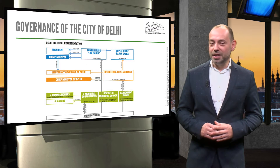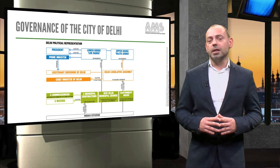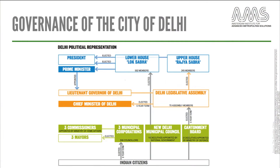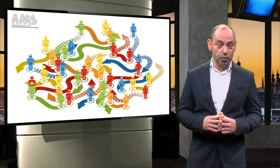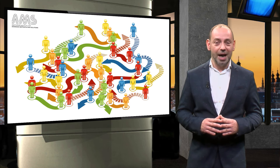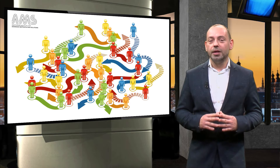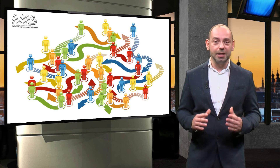Metropolitan innovators must understand and operate in complex systems of governance, because that will allow them to make better decisions and deliver better solutions — like in the example of how the governance of the city of Delhi in India is organised. But metropolitan innovators must also be able to design new relationships and tools to articulate different actors and create new forms of collaboration. This will allow them to deliver much better tailored and realistic solutions.